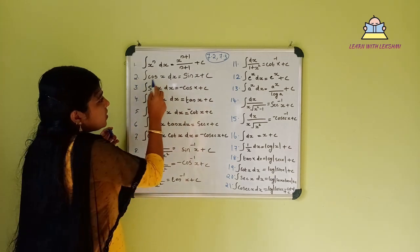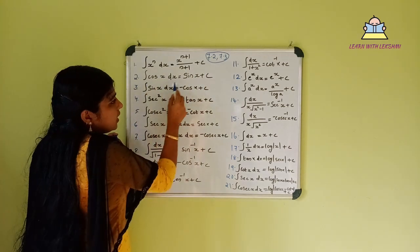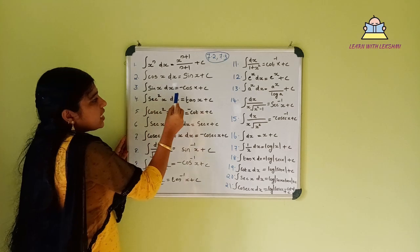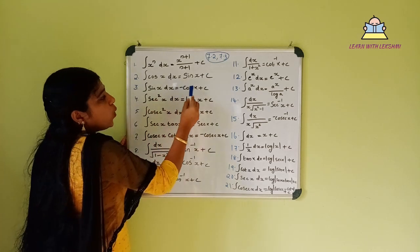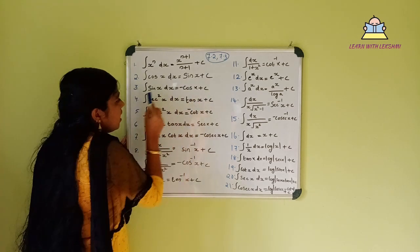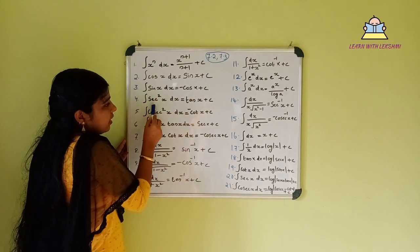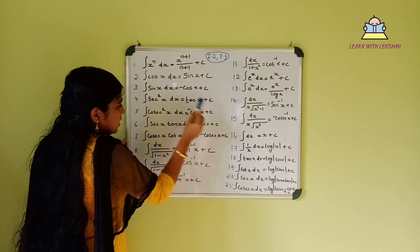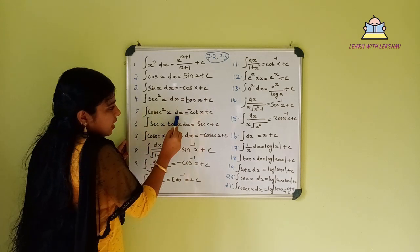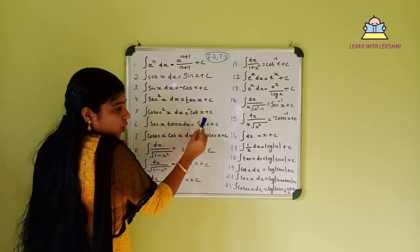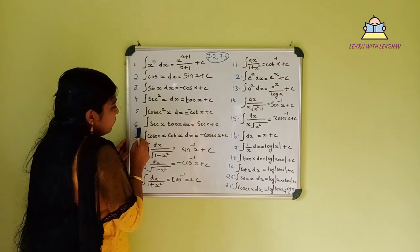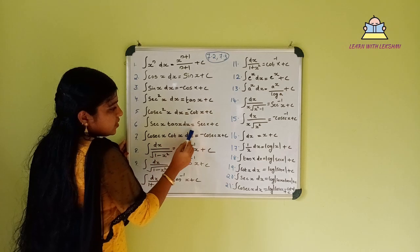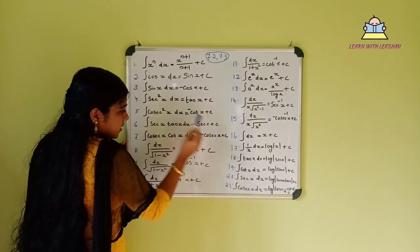Integral of cos x dx is sin x plus c. Integral of sin x dx is minus cos x plus c. Integral of sec²x dx is tan x plus c. Integral of sec x tan x dx is sec x plus c.